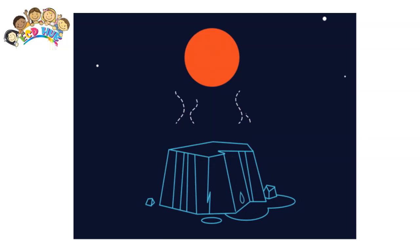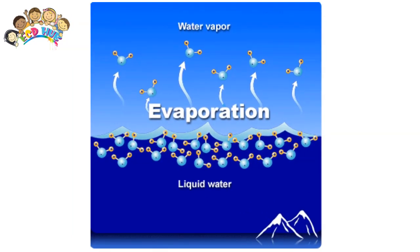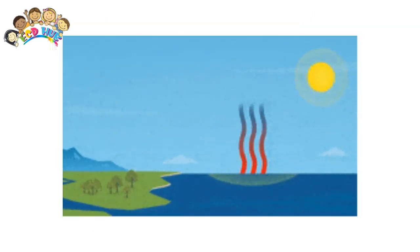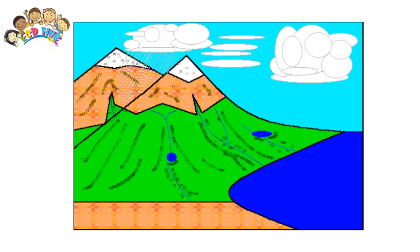Condensation: When the air cools down, the water vapor condenses back into water droplets. These water droplets collect together and form clouds.